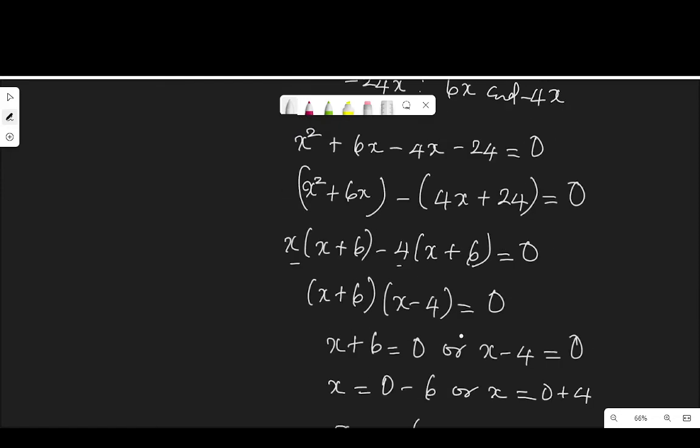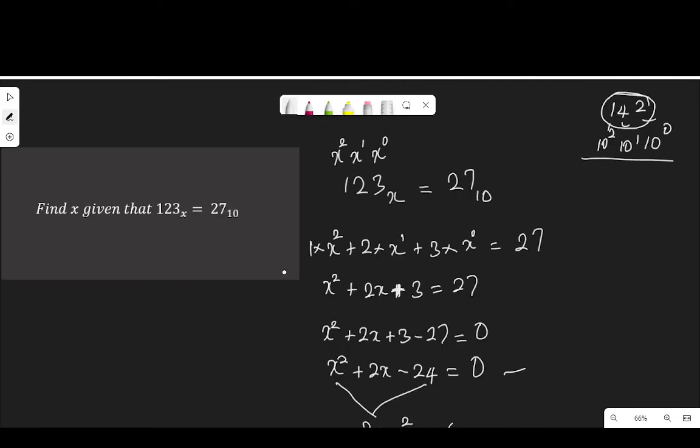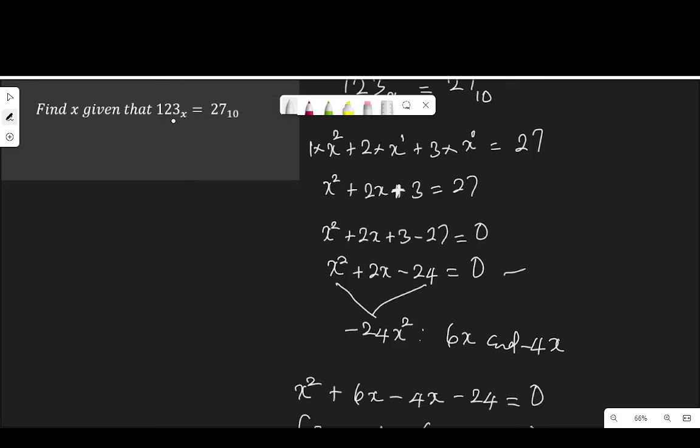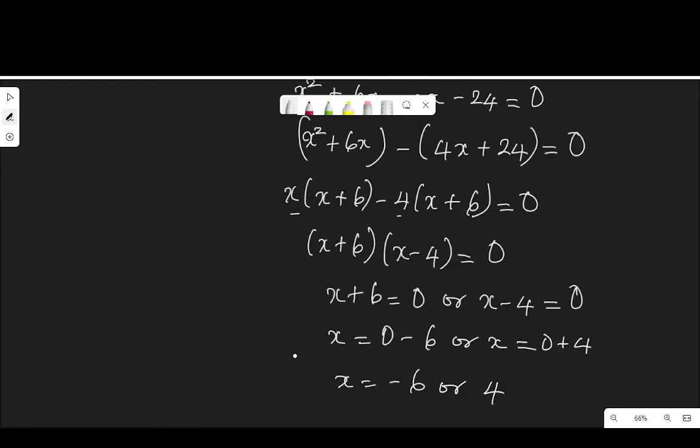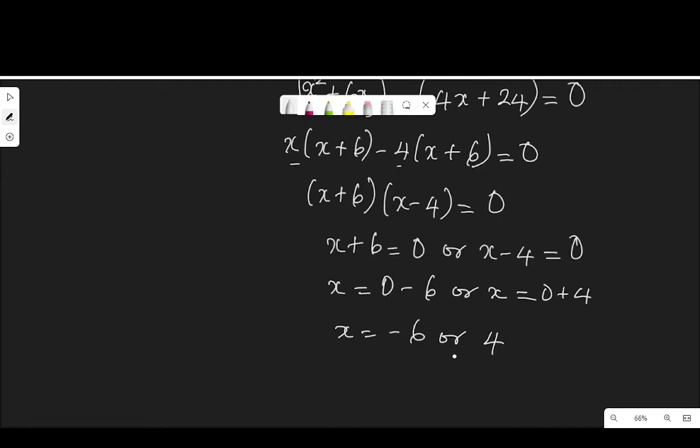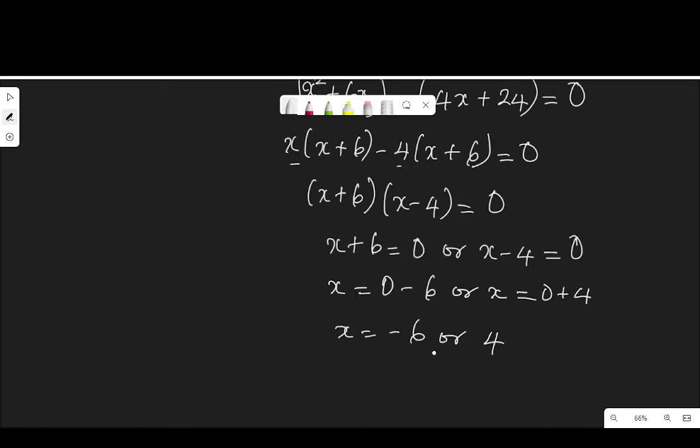Now, we are dealing with number basis here. Find the value of x, given that 1, 2, 3 in base x is equal to 27 in base 10. The base of a number cannot be negative. Therefore, the only value that satisfies this equation is 4.